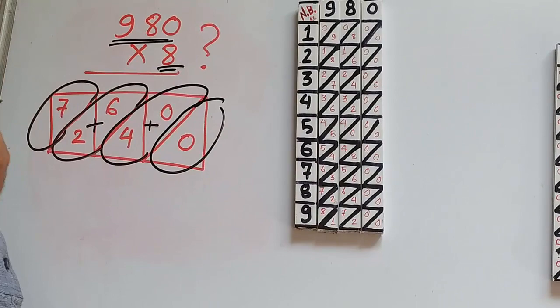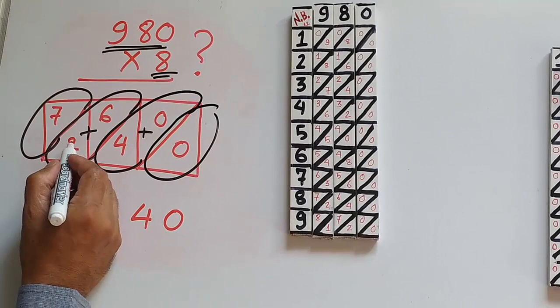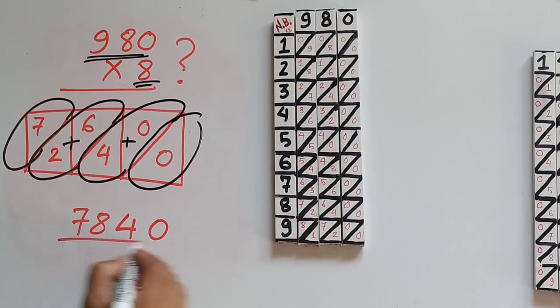So we have the answer 0, 4 plus 0 is 4, 2 plus 6 is 8, and 7. So we have the answer 7,840.